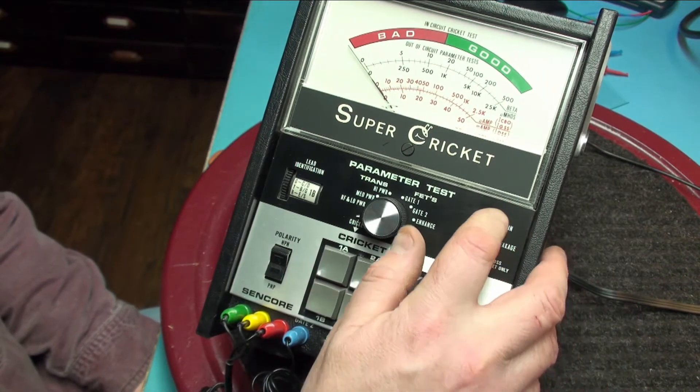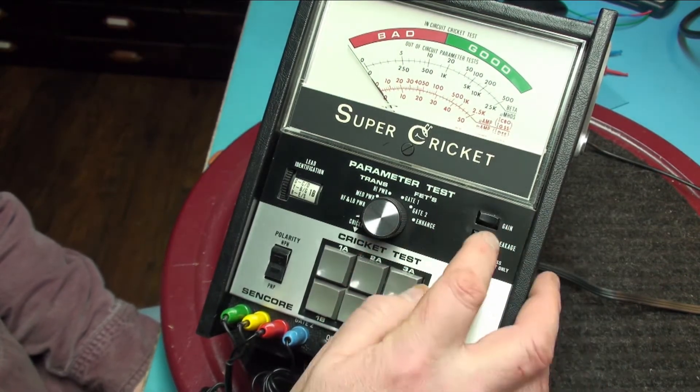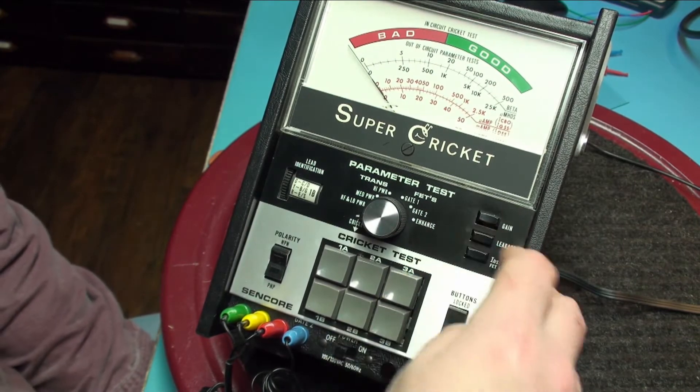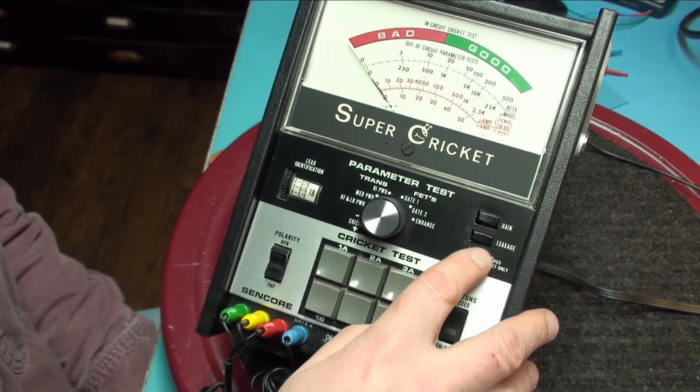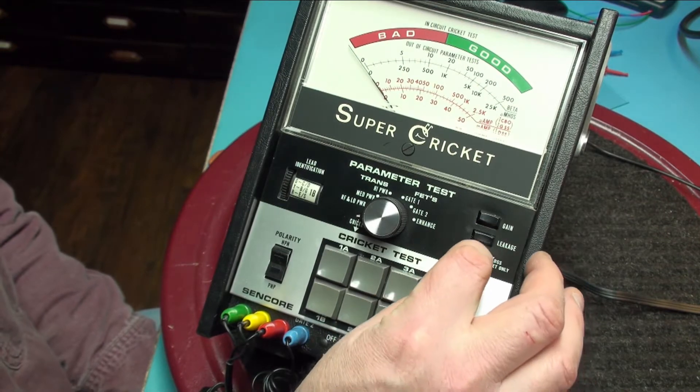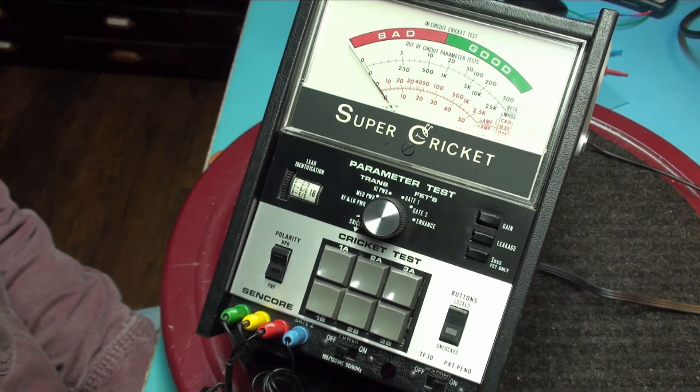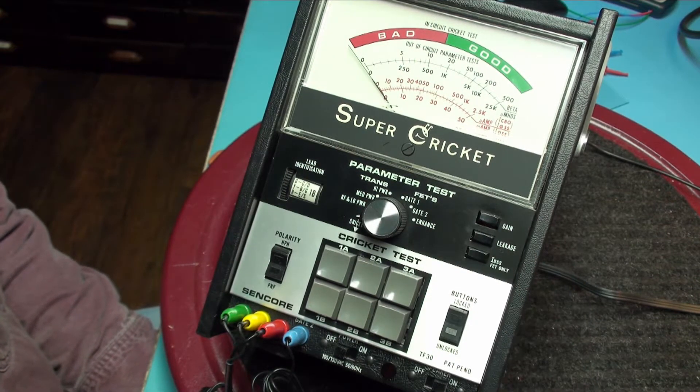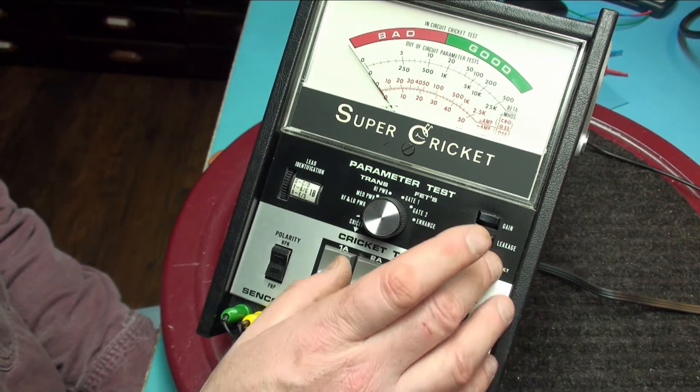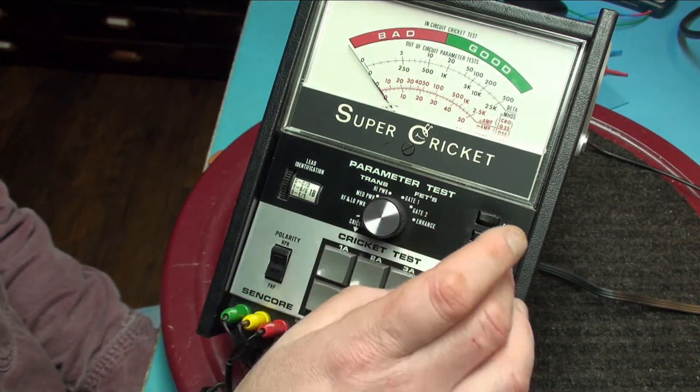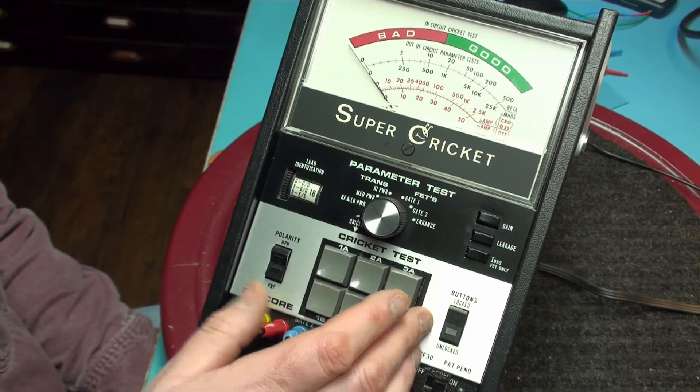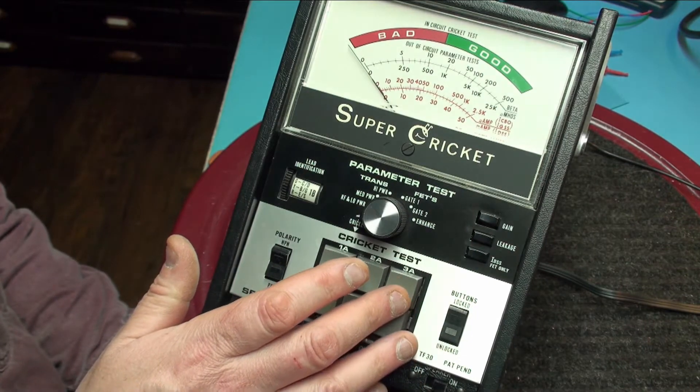Over here we have a gain test button, a leakage button, and an IDSS FET only button. And I really don't know anything about FETs and I don't even have one to test. So I'm not going to go into detail about FETs but I will demonstrate definitely transistors and several of them and diodes.